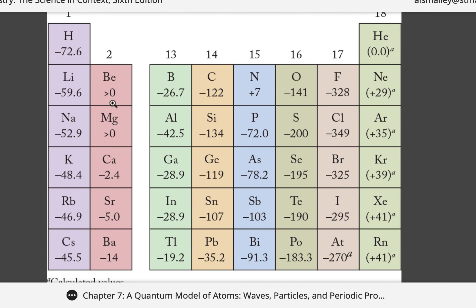Notice that it takes energy to add another electron to beryllium and magnesium. It would also take a decent amount of energy to add another electron to any of the noble gases. Let's think about why this might be.